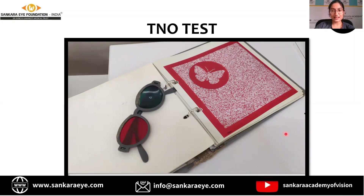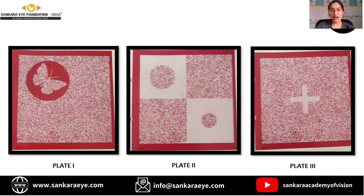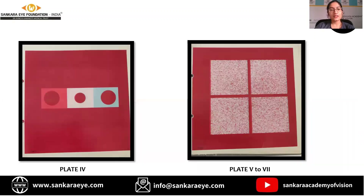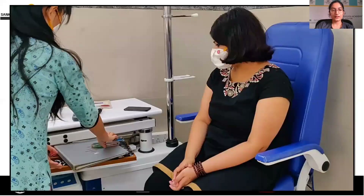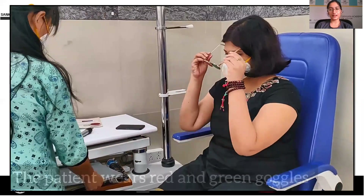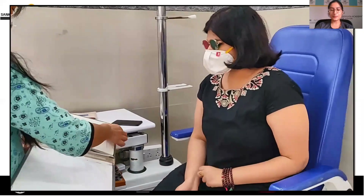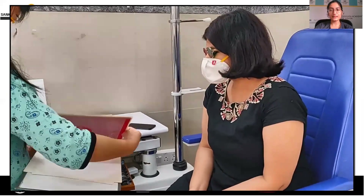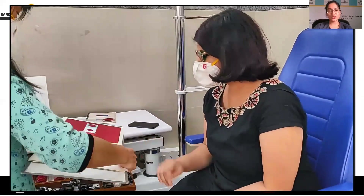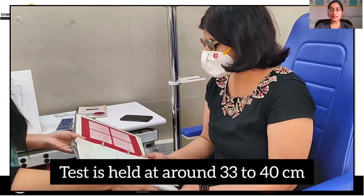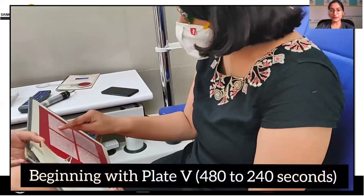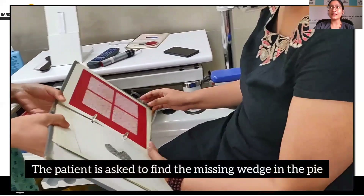The next test is the TNO test. It is done using red-green glasses and the TNO test has seven plates. Plates one to three are for gross stereopsis and help the examiner establish whether stereopsis is present at all. Plate number four is a suppression test, and plates five to seven are useful for quantifying stereo acuity. The patient wears red-green goggles over their refractive correction including near correction if any. The test is performed at 40 centimeters. Start with plate number five, which measures 480 to 240 seconds of stereo acuity. Ask the patient where the wedge of the pie is missing. Continue to plates six and seven, which help quantify stereopsis up to 15 seconds of arc.